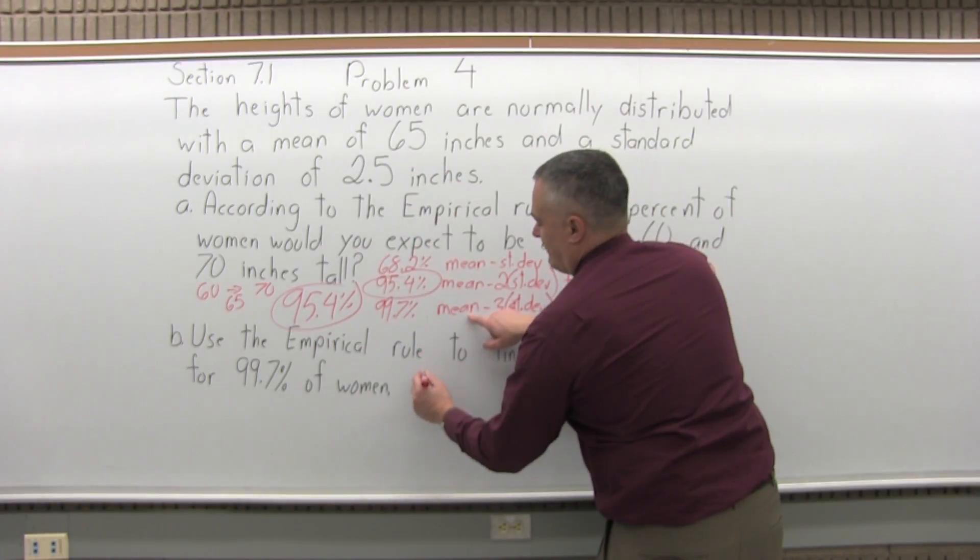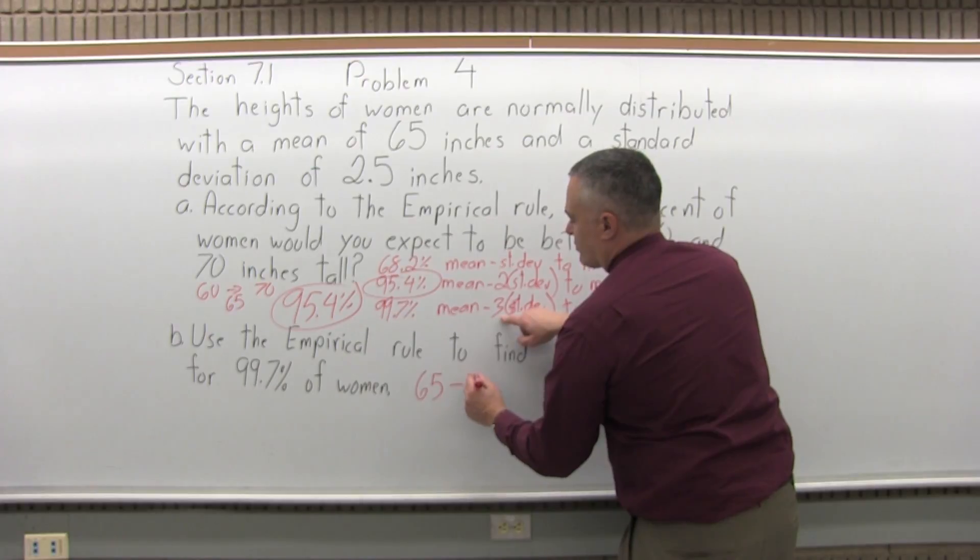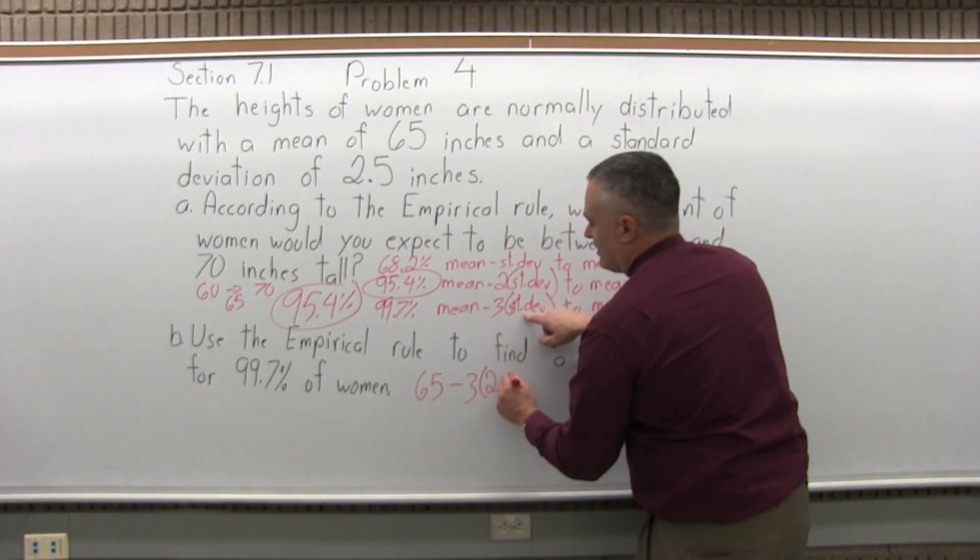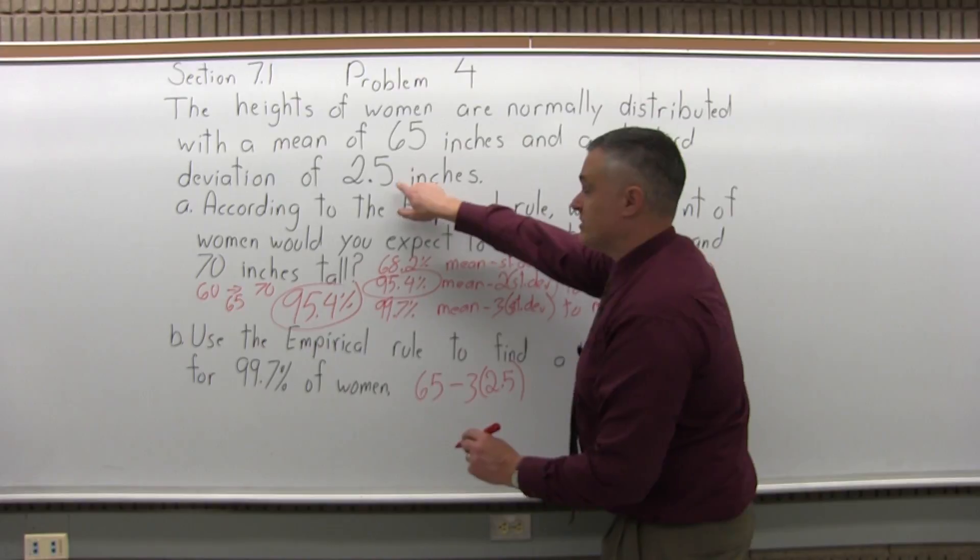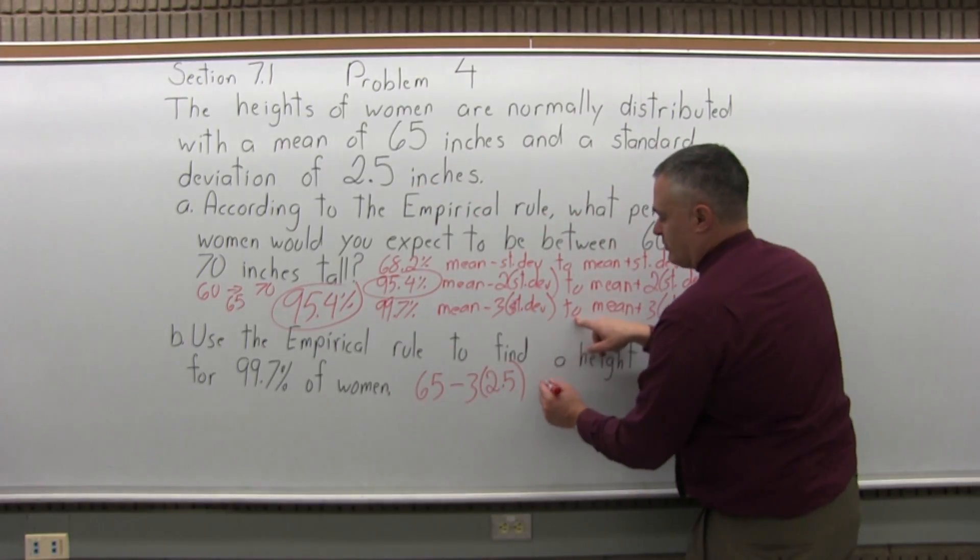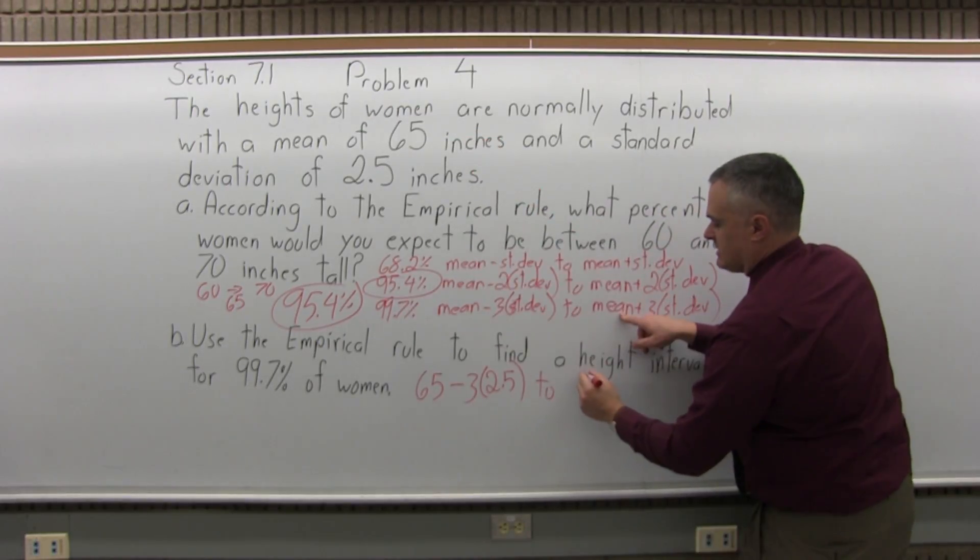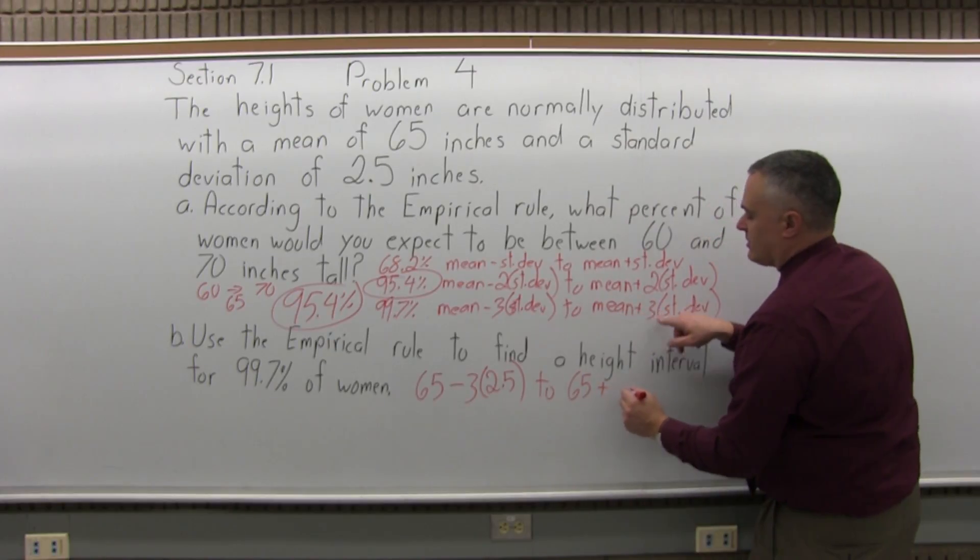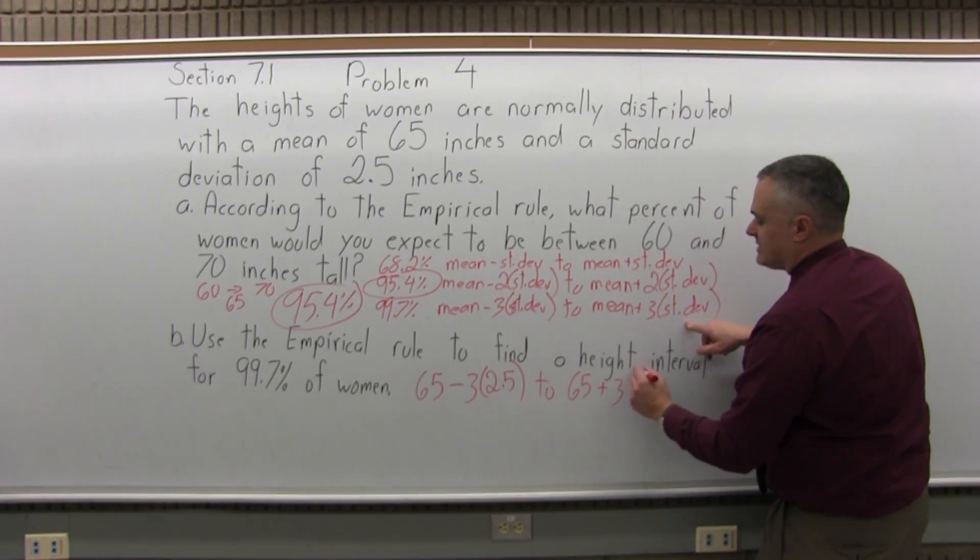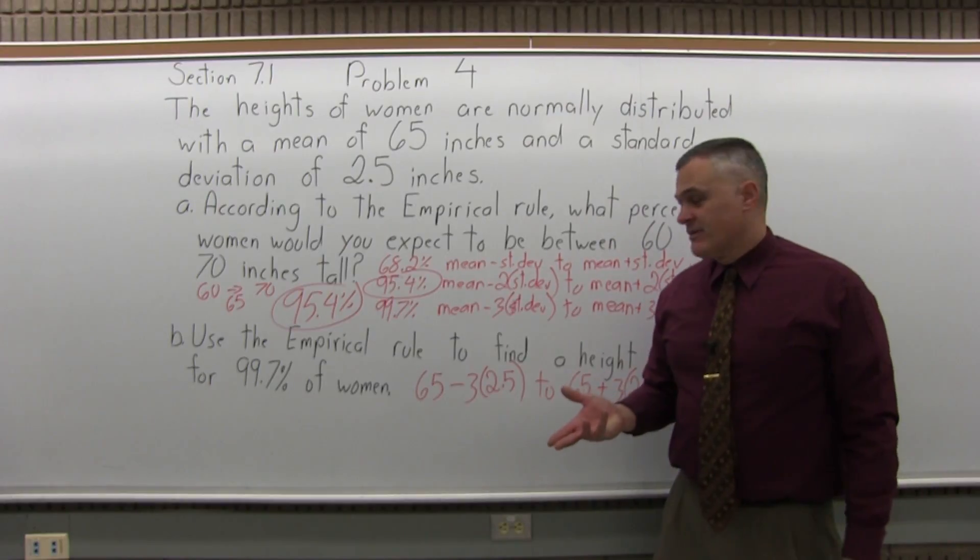The mean is 65 minus three times the standard deviation, which is 2.5, which is given right in the problem. That will be the lower end of my interval to the upper end of the interval is the mean, 65 inches, plus three times the standard deviation, which again is given in the problem as 2.5 inches. So that's the math we have to do.